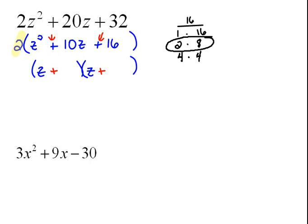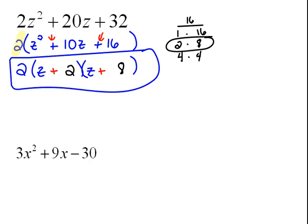How about 2 and 8? 2 times 8 would give us 16. And 2z plus 8z would give us 10z. Now we cannot forget about the 2 that we had on the outside. We have to continue bringing that down because that is a factor.